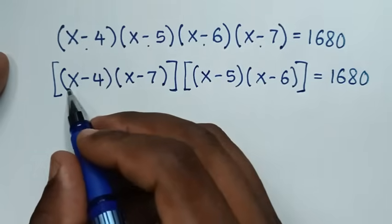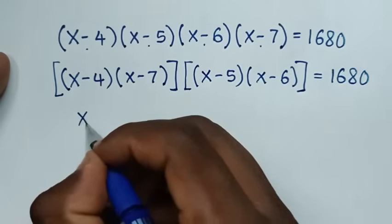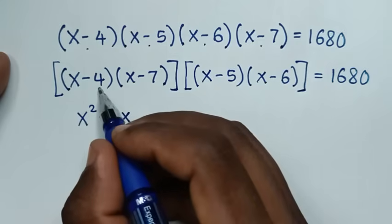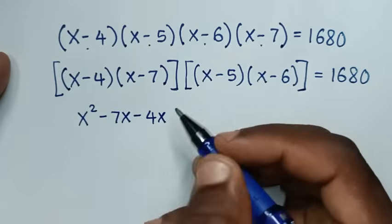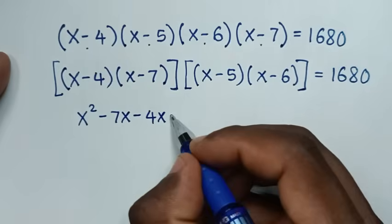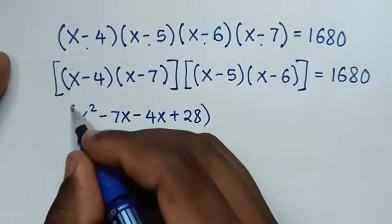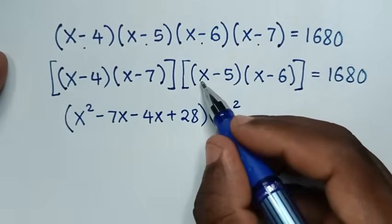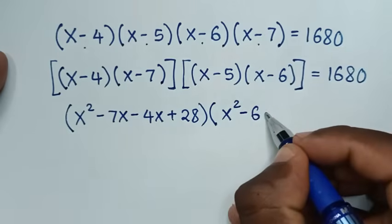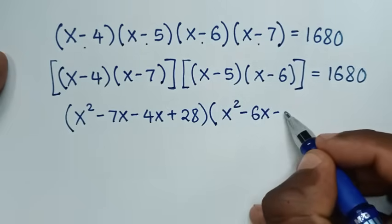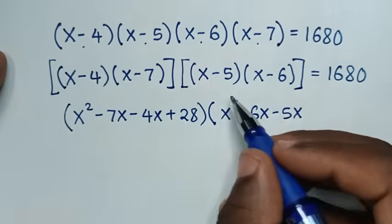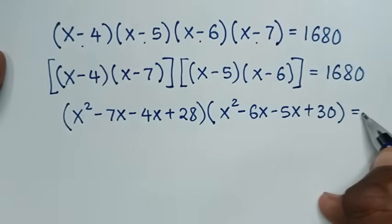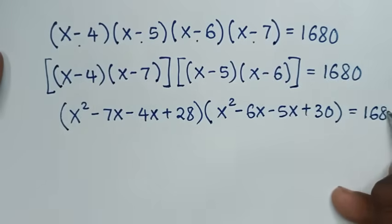Expanding (x minus 4)(x minus 7): x times x is x squared, x times negative 7 is negative 7x, negative 4 times x is negative 4x, and negative 4 times negative 7 is positive 28. Expanding (x minus 5)(x minus 6): x squared, negative 6x, negative 5x, and negative 5 times negative 6 is positive 30.